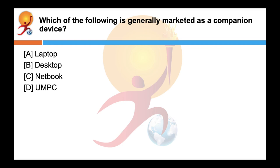Which of the following is generally marketed as a companion device? Correct answer is C netbook. A netbook is also called as a mini notebook as it is a small, lightweight, inexpensive laptop often marketed as a companion device. It is suited for general computing tasks and other web-based applications.